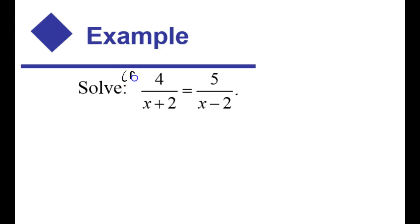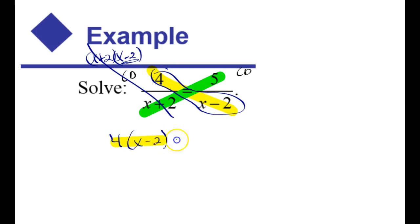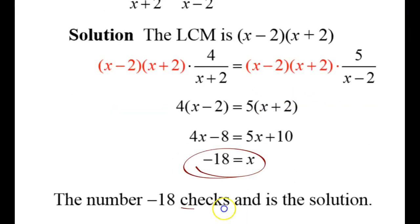Let's try again. You could multiply both sides by the common denominator here, but sometimes just cross-multiplying is a faster route. So I'll just say yellow equals green — it's the same thing as multiplying by the common denominator. If you multiply by the common denominator, which is x plus 2 times x minus 2, the x plus 2's cancel and you're just doing 4 times this, which is the same as doing the yellow. So it's 4 times x minus 2 equals 5 times x plus 3. That gives 4x minus 8 equals 5x plus 10. Subtract 4x from both sides and subtract 10 from both sides, leaving negative 18 equals x. Negative 18 is not going to cause me to divide by 0, so that should be a solution, and the author agrees.